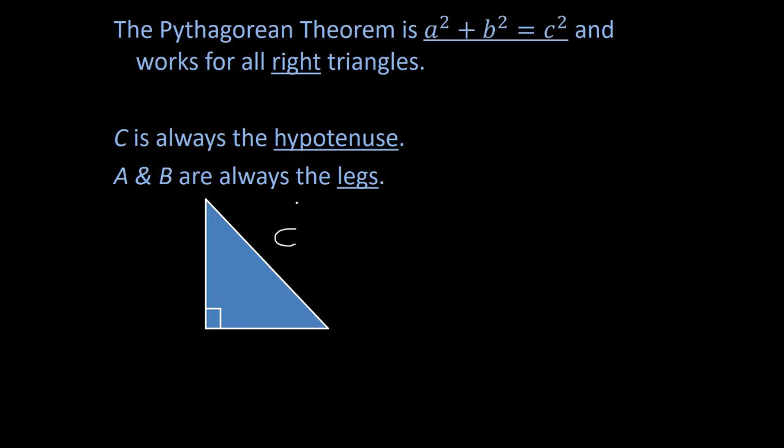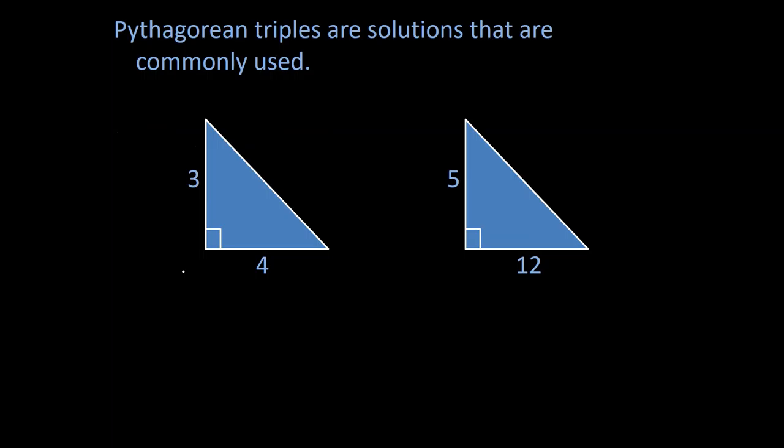A and B are going to be your legs. Those are just the other two sides. Those are pretty interchangeable. Doesn't matter which one is which. So I'm going to label this side A and label that side B. But again, you can just easily call the bottom one A and call the top one B. Doesn't matter. C, though, has to be your hypotenuse.